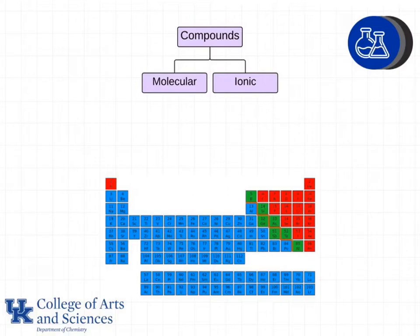Let's refresh our memory about what type of elements go into molecular and ionic compounds. Remember that in a molecular compound we have two or more nonmetals. Our nonmetals are typically found on the right side of the periodic table. In this drawing they're colored in red.